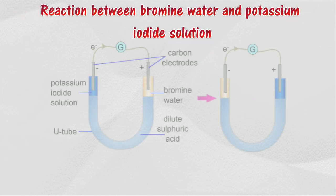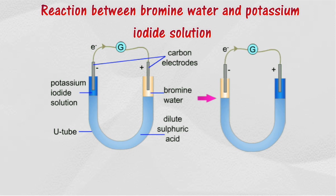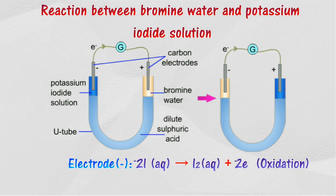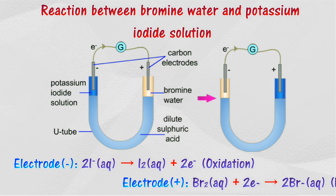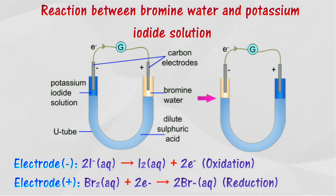Transfer of electrons at a distance for the reaction between bromine water and potassium iodide solution. In this reaction, potassium iodide solution undergoes oxidation. The carbon electrode immersed in potassium iodide solution acts as the negative electrode. Bromine receives electrons and is reduced to bromide ion. The carbon electrode immersed in bromine water acts as the positive electrode.